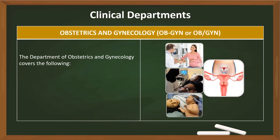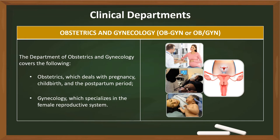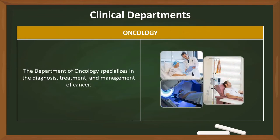The department of obstetrics and gynecology, or OBGYN for short, covers the following: obstetrics, which deals with pregnancy, childbirth, and the postpartum period; and gynecology, which specializes in the female reproductive system. The department of oncology specializes in the diagnosis, treatment, and management of cancer.